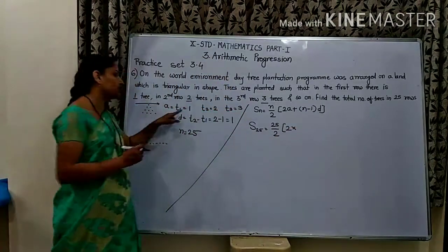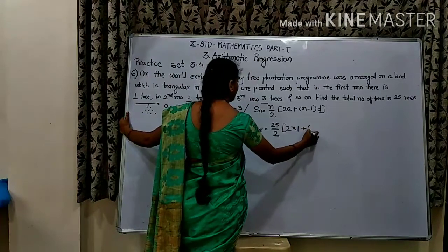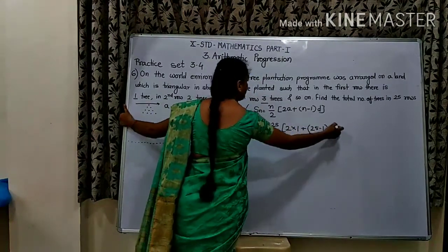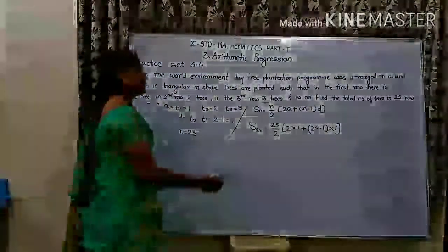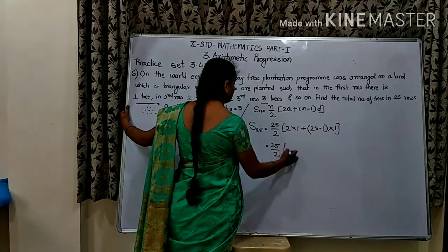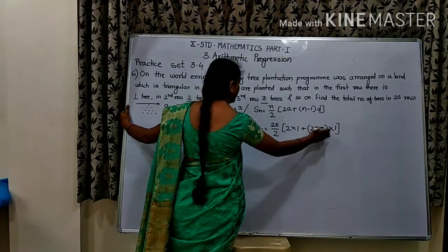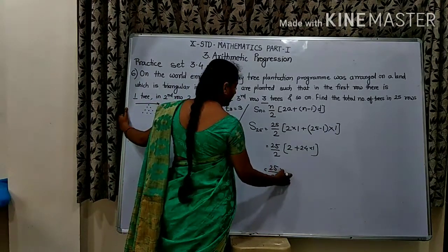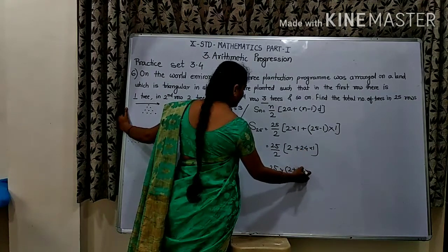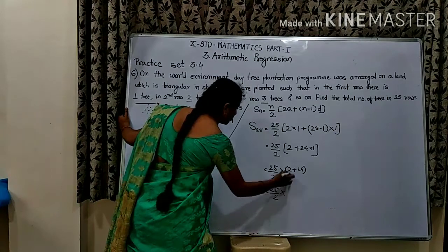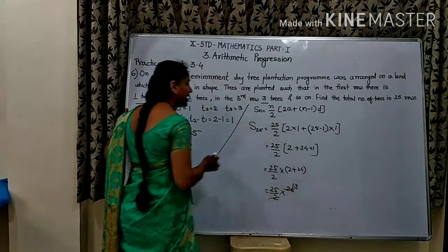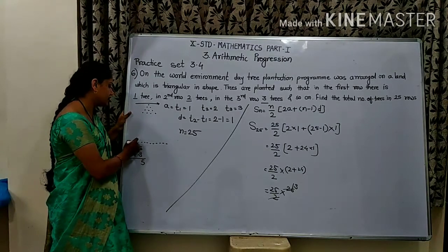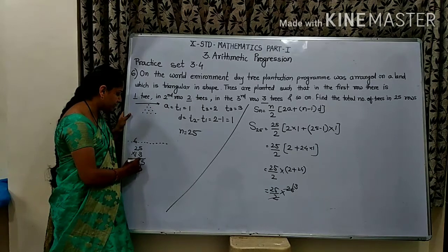Now using the sum formula: S_n = n/2 × [2a + (n-1)d]. So S_25 = 25/2 × [2(1) + (25-1)(1)] = 25/2 × [2 + 24] = 25/2 × 26 = 325.